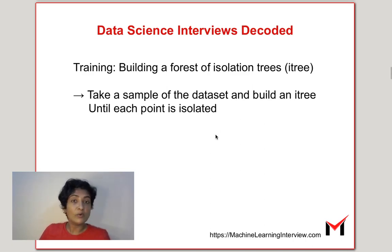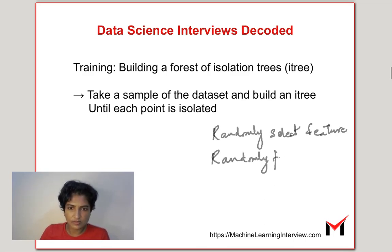So, how exactly do we build the isolation tree? Randomly select a feature and randomly partition along the range. These are the two steps and we keep doing this until every point is isolated.